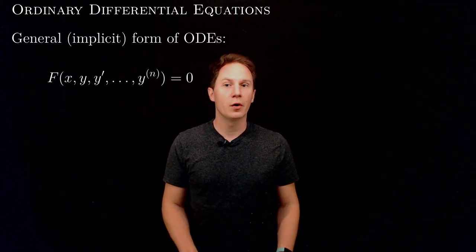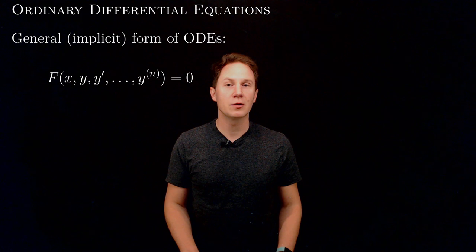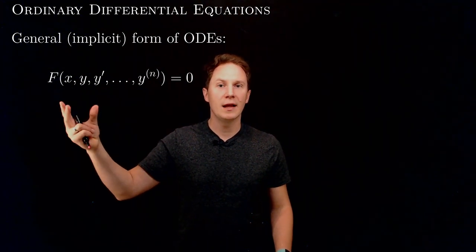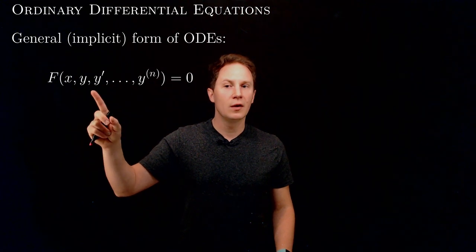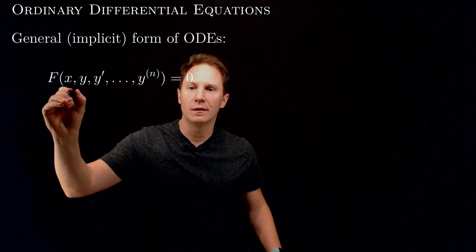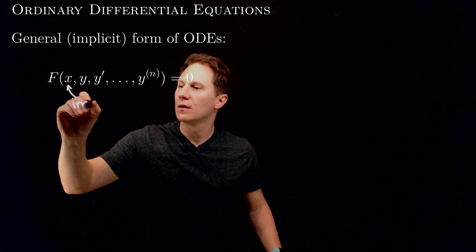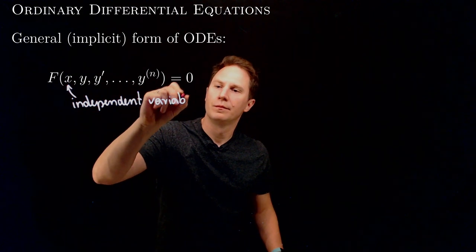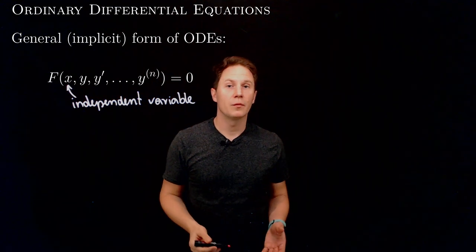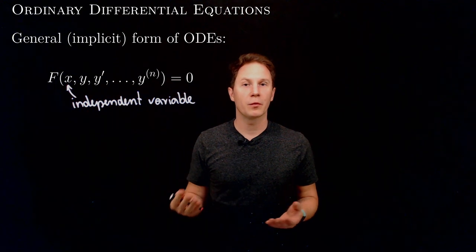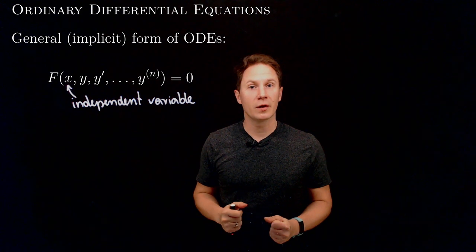This is the most general form of an ordinary differential equation, or ODE for short. We have a function f that connects and relates the variable x to the unknown function y of x, and the derivatives of that unknown function y up to some order. We call the variable x the independent variable, and be prepared for different letters being used for the independent variable depending on the context and the type of problem.